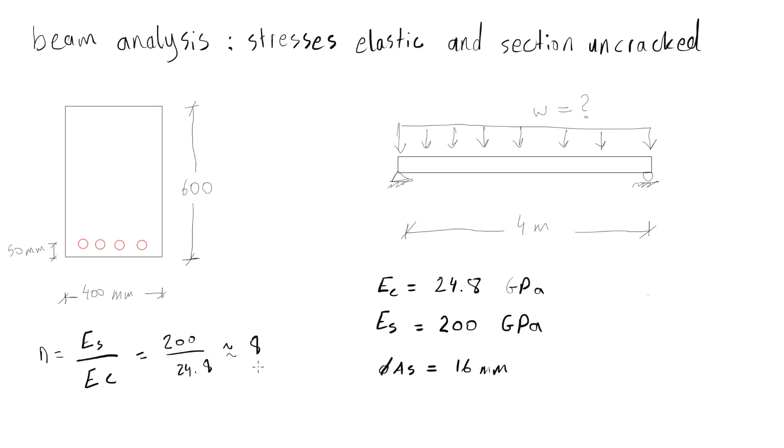So that means the steel is 8 times stiffer compared to the concrete, or in other words, if we remove the area of the steel we should add 8 times of the area as concrete.